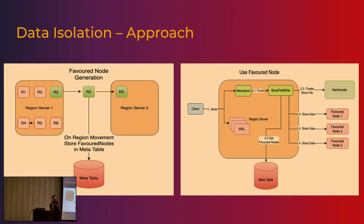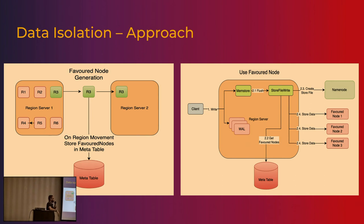Every region has associated metadata that consists of three favored node replicas. Those three nodes belong to the same RegionServer group or tenant that the region's table belongs to. By ensuring this, we can guarantee that a particular table belonging to a particular tenant will be hosted only on nodes belonging to that tenant. Every time there is a region movement, you recreate those favored nodes. Data movement does not happen live — it happens during compaction. Until then, only new data is allocated to the same favored nodes stored in metadata.